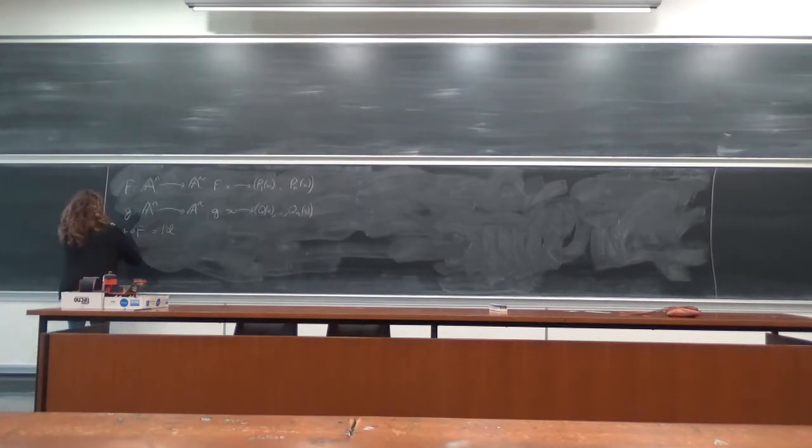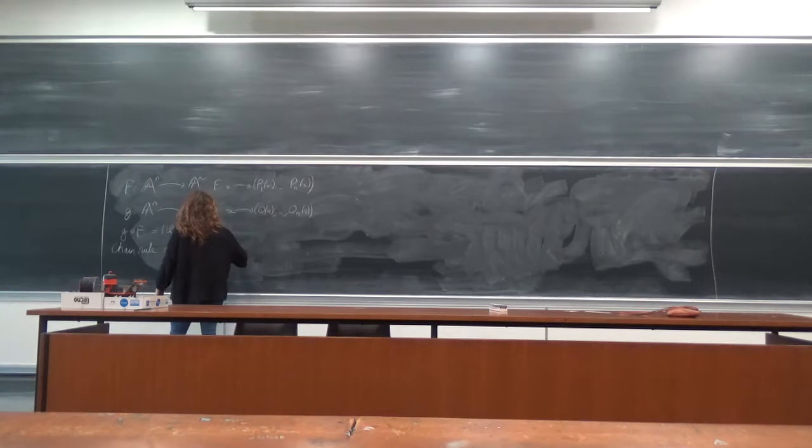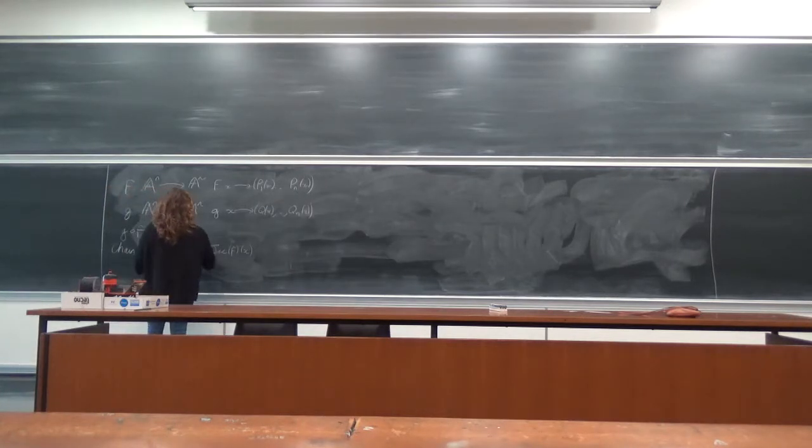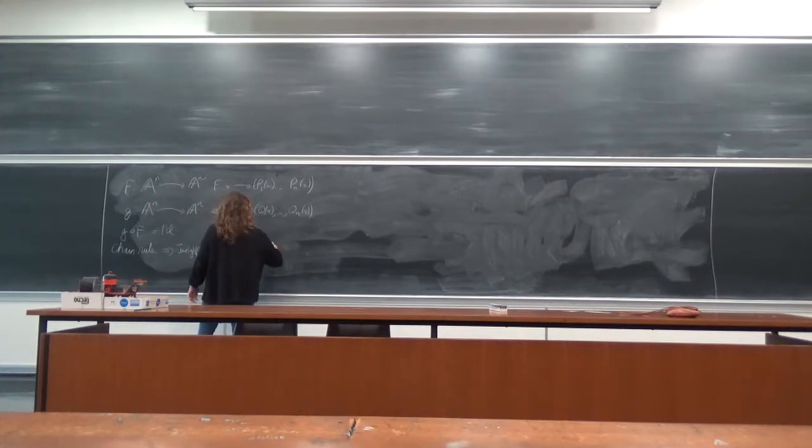So now if I use the chain rule, that tells me that the Jacobian of f at a point x composed with the Jacobian of g at the point f of x is the identity.